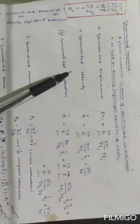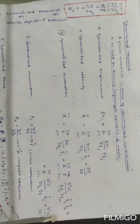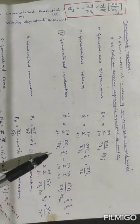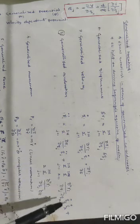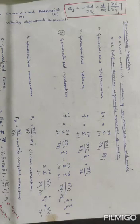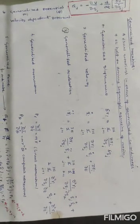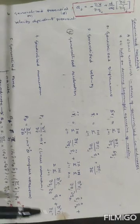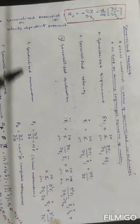The final answers are: generalized displacement, generalized velocity, generalized acceleration — which has four parts — generalized momentum formula, generalized force formula, and then generalized potential, or velocity-dependent potential.